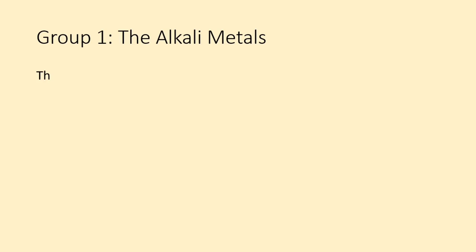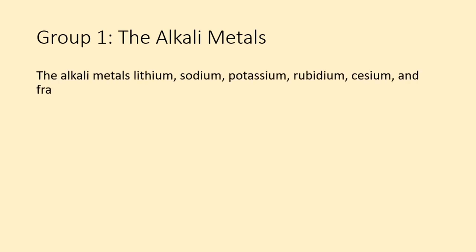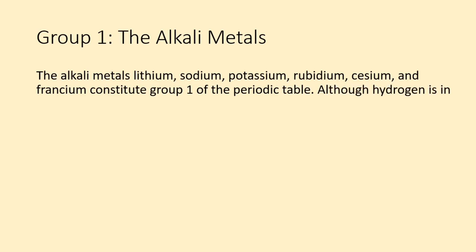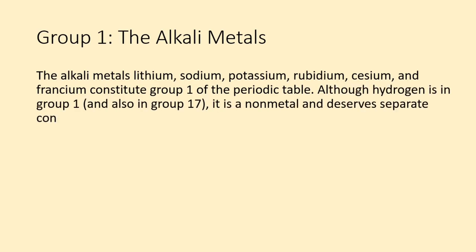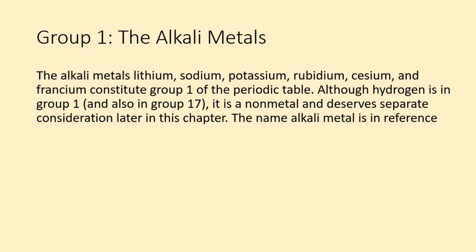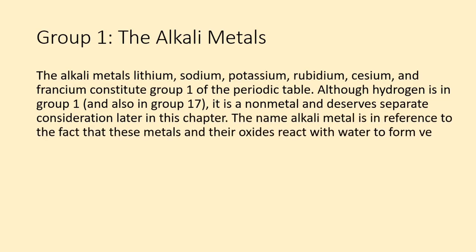Group 1: the alkali metals. The alkali metals — lithium, sodium, potassium, rubidium, cesium, and francium — constitute Group 1 of the periodic table. Although hydrogen is in Group 1 and also in Group 17, it is a non-metal and deserves separate consideration later in this chapter. The name alkali metal refers to the fact that these metals and their oxides react with water to form very basic, alkaline, solutions.